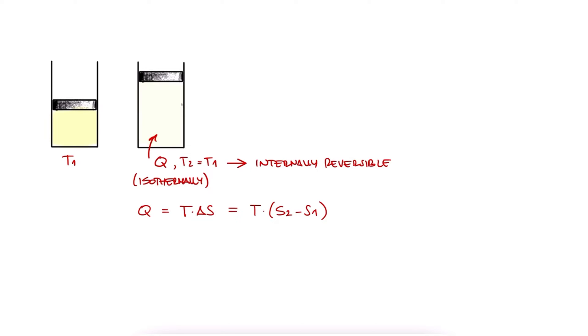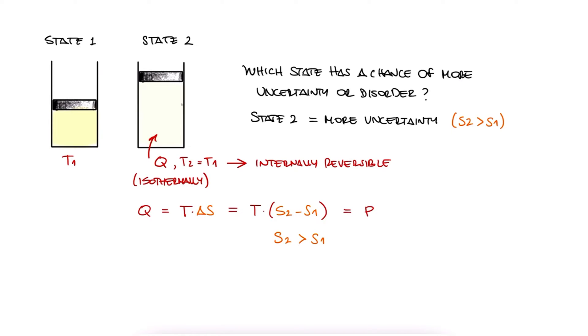Let's say we have a piston cylinder system that operates isothermally when adding heat. Since it's isothermal and therefore at least internally reversible, the heat would be equal to t times delta s, or s2 minus s1. And if we think about what we said earlier, where do you think there's a higher chance for uncertainty or disorder? At state 1 or at state 2? Well, even just from the fact that the volume is larger in 2, the possibilities for the arrangement of the substance is higher at 2. And this is consistent with our expression, s2 is higher than s1, and that's why the heat is going to be positive. We need to add heat to go from 1 to 2.